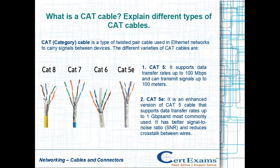The different varieties of CAT cables are: CAT 5 — it supports data transfer rates up to 100 megabits per second and can transmit signals up to 100 meters.